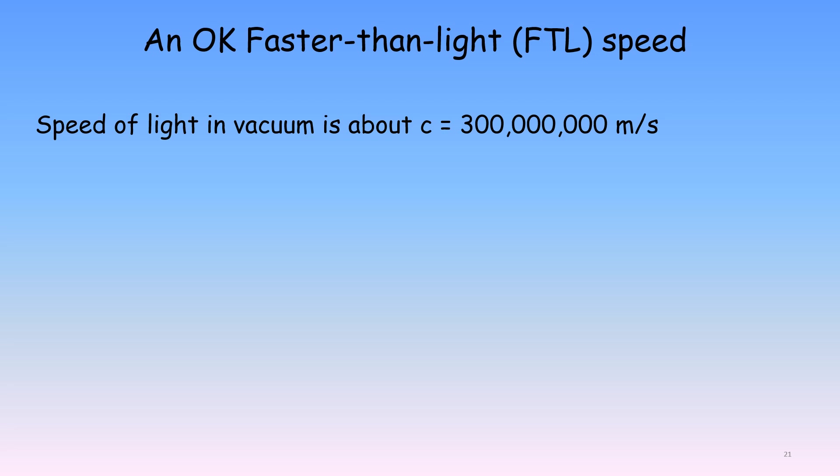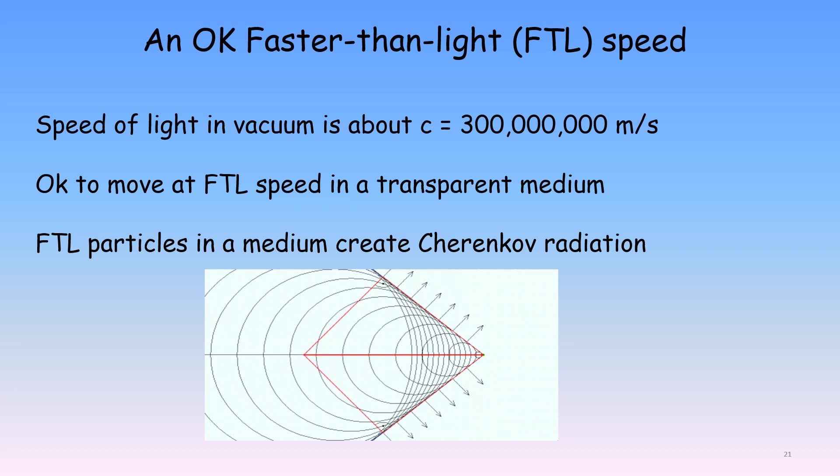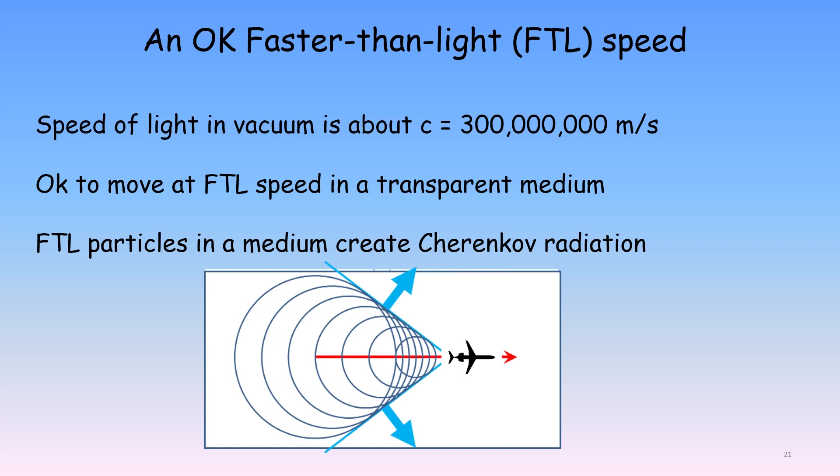Einstein's ban on faster than light speeds referred specifically to the speed of light in vacuum. This speed is about 300 million meters per second and is usually represented by the lower case letter c in physics. For a transparent medium like water or glass, where light has a reduced speed, it is perfectly okay to have a particle traveling faster than light in that medium. In such a case, a moving charged particle creates what is known as Cherenkov radiation. This radiation is in the form of a conical shock wave. This is very similar to the wake of a boat. It is also similar to the shock wave occurring when a jet aircraft moves through air at supersonic speed, giving rise to a sonic boom.